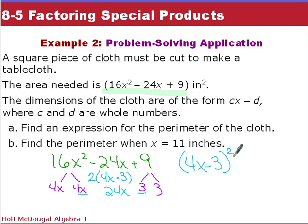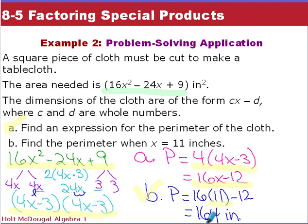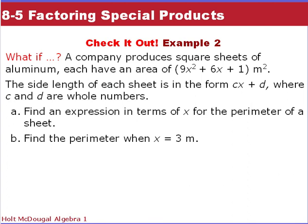That factored form represents length times width, meaning each side is (4x − 3). There are four sides in a square, so we take one side length and multiply by 4. Our expression for the perimeter becomes 16x − 12. That's the answer for part A. For part B, find the perimeter when x = 11: substitute 11 in for x, and the perimeter will be 164 inches.